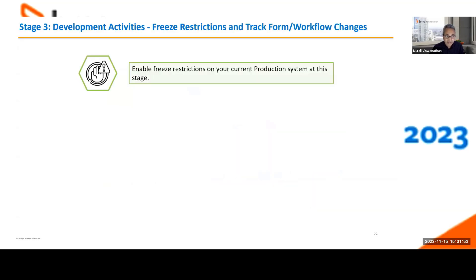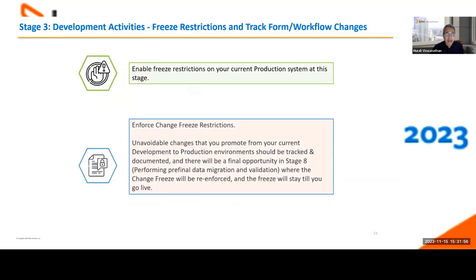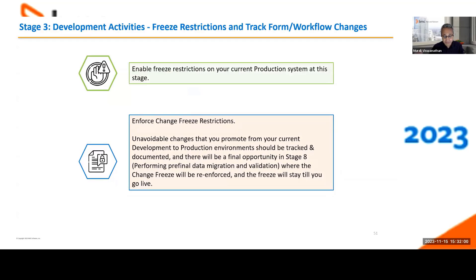Stage three is all about your development activities. At this time, we highly encourage you to enable a change freeze in your current production system. If, between now and go-live on the container platform, you still have to promote unavoidable changes to production, we recommend documenting those changes. There will be one more opportunity during stage eight — pre-final data migration validation — where you can apply those changes. Any unavoidable changes between this stage and the final stages should be tracked so you can re-import them.